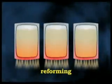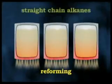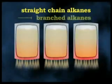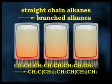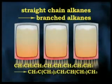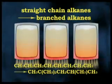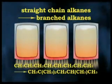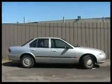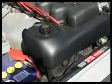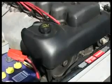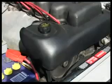Reforming involves the breaking of straight chain alkanes into branched alkanes. The branched chain alkanes in the 6 to 10 carbon atom range are preferred as car fuel. These alkanes vaporise easily in the engine's combustion chamber without forming droplets, and are less prone to premature ignition, which affects the engine's operation.